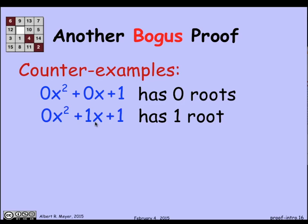What about 0x² + 1x + 1? Well, that's a 45 degree line, the y equals x line. And it only crosses the origin once. It has only one root.